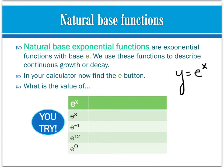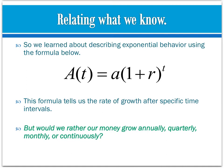Functions that have e as their base are called natural base exponential functions. We use these to describe continuous growth or decay — growth that is continuously happening as time passes. Go ahead and pick up your calculator, find the e button, and fill in the chart for all the values of e. When you press the e button, it should give you a caret and ask you to input a value in the exponent. We used the previous formula for exponential behavior with annual, quarterly, or monthly growth, where a was initial value, r was rate, and t was the time interval.